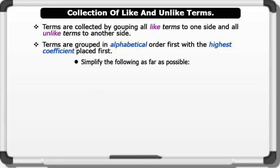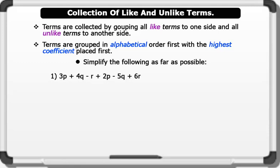Simplify the following as far as possible. One: 3P plus 4Q minus R plus 2P minus 5Q plus 6R.